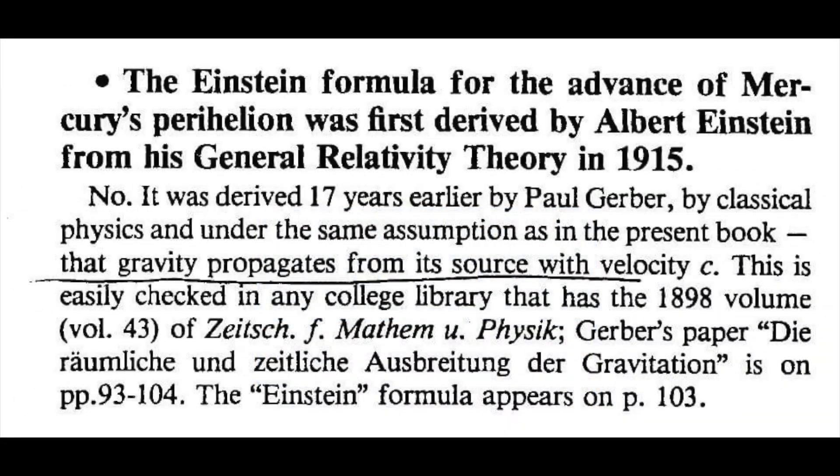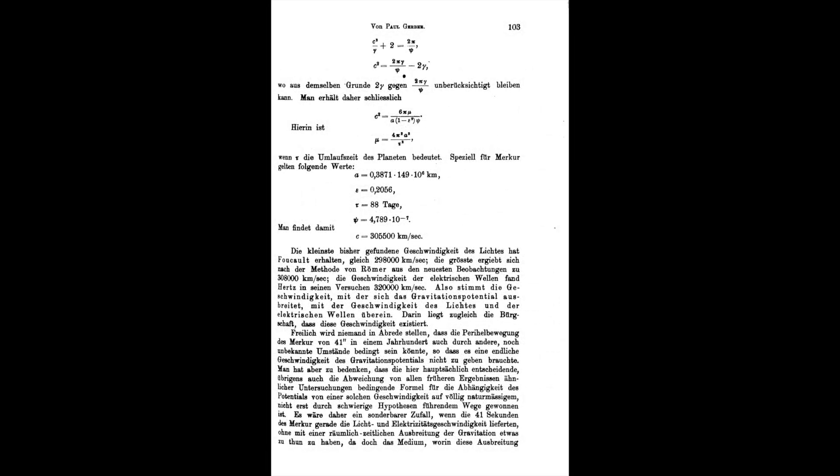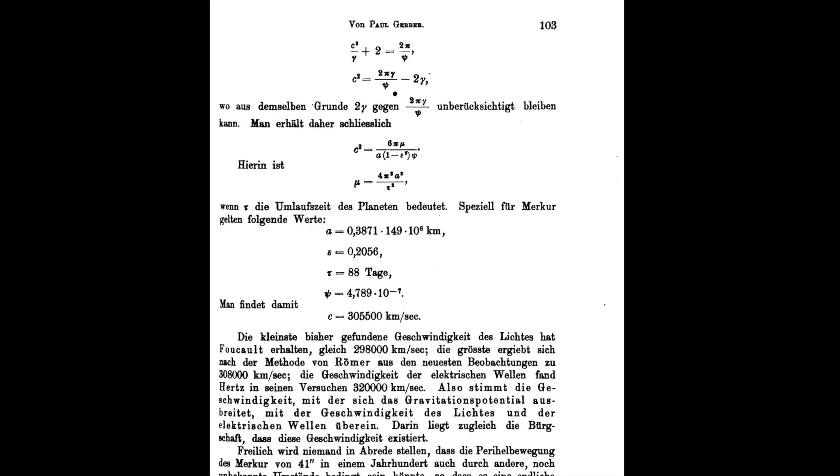But that alternative for the perihelion was already offered by Paul Gerber 17 years before Einstein copied and changed the famous E equals mc squared equation and the advance of the perihelion of Mercury.